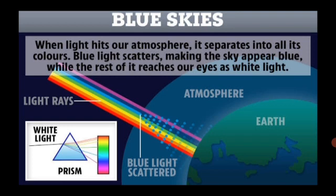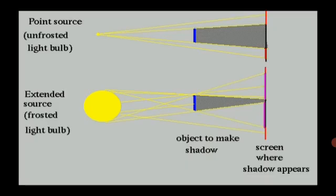At sunset, the light reaching us travels a great distance through the atmosphere. Due to the greater distance, there is more scattering of blue color. As a result, the red-yellow light reaches us directly and the sun appears red. Red light is scattered less than blue light.